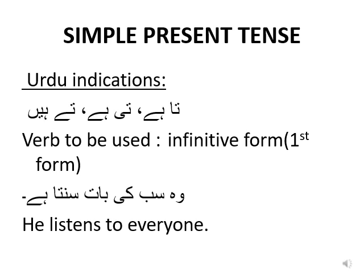The verb which we are going to use while translating a simple present tense sentence is the first form of the verb, or the infinitive form of the verb. So the translation is 'he listens to everyone'. Here 'listens' is the first form or the infinitive form of the verb.